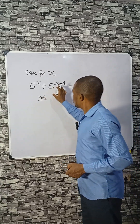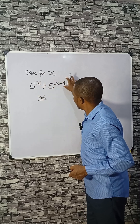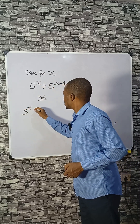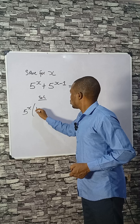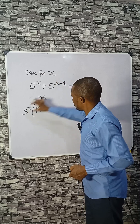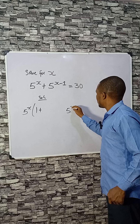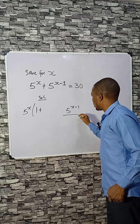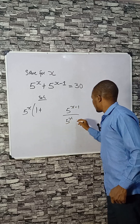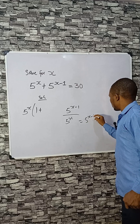The first thing you need to do is factorize what is common here, which is 5 raised to the power x. Here we get 1 plus — now you divide this by this. 5 raised to the power x minus 1 divided by 5^x, we can express this as 5 raised to the power x minus 1.